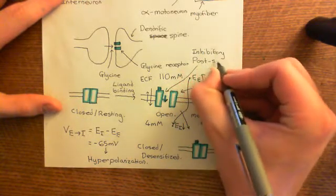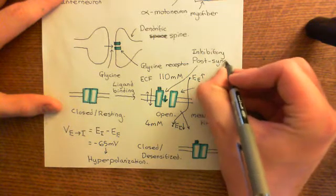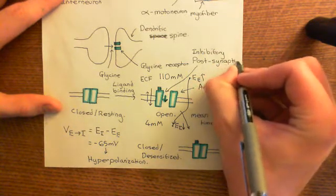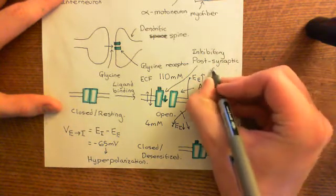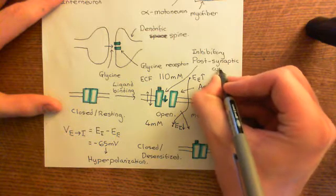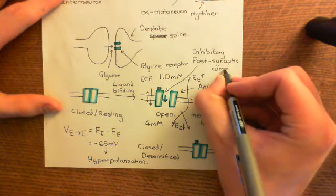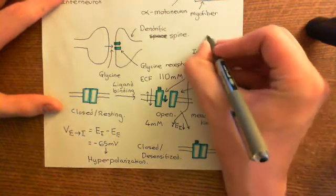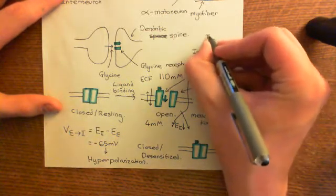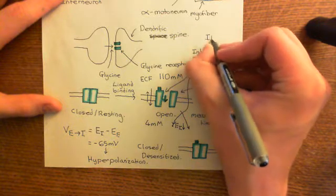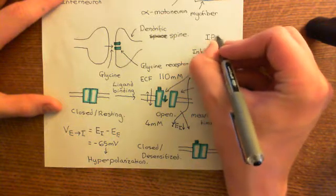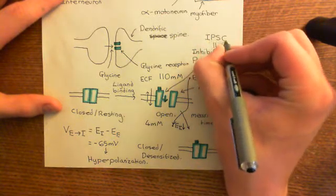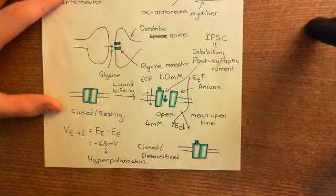An inhibitory postsynaptic current — I do apologize for the earlier slip. This is an inhibitory postsynaptic current, often denoted as IPSC for short.